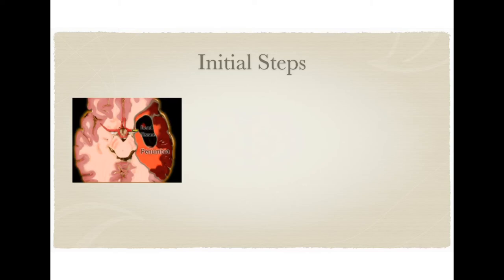The initial steps for a patient presenting with an acute or suspected stroke are all designed to protect an area of the brain called the ischemic penumbra. Whenever there's a stroke — say a blockage of the middle cerebral artery — the immediate tissue supplied by that vessel becomes infarcted and dies; this tissue can never be recovered. But the tissue surrounding it where blood flow is compromised but not completely lost is the ischemic penumbra: this area is injured, but if prompt intervention is taken, it can be saved and function preserved.